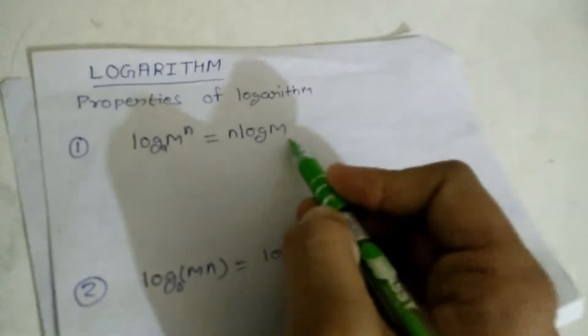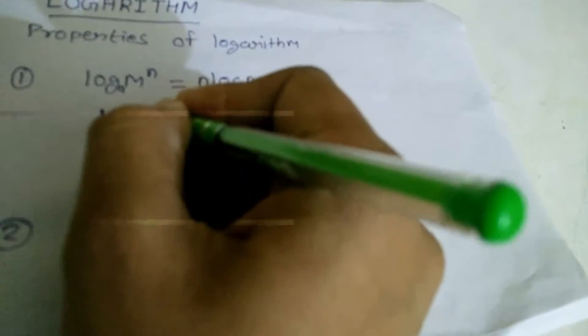We will discuss all properties using examples. I am taking one example: log 5 raised to the power 2.